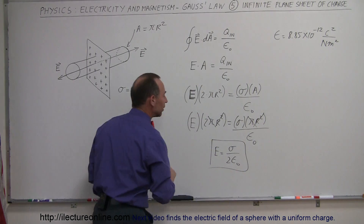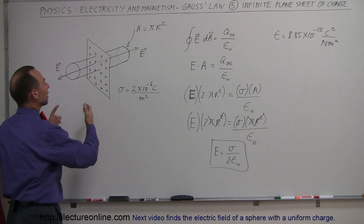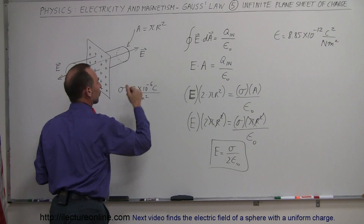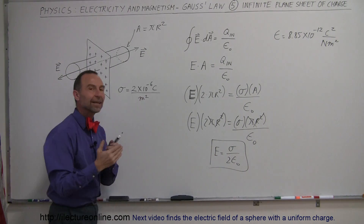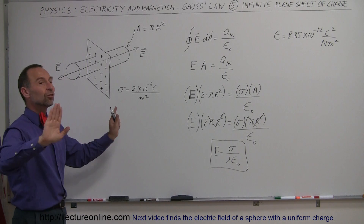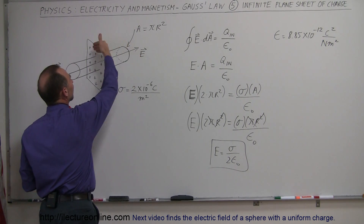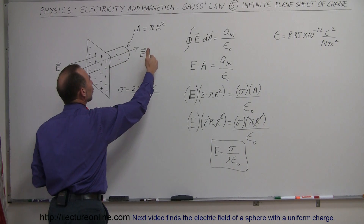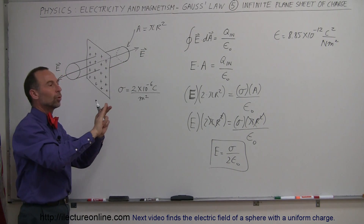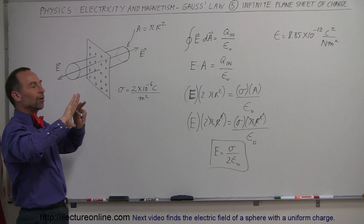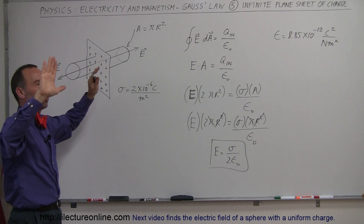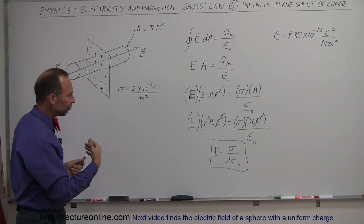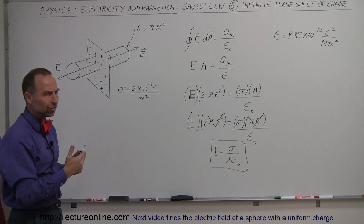That is the electric field strength outside an infinite sheet. Why doesn't it diminish as you go further out — why is there no dependency on distance from the sheet? Because if it's an infinite sheet, the relative effect of the charge remains the same no matter how far you go. As you move further away, you have more and more influence from charges that are farther away at a smaller angle. Therefore, the electric field strength does not diminish.